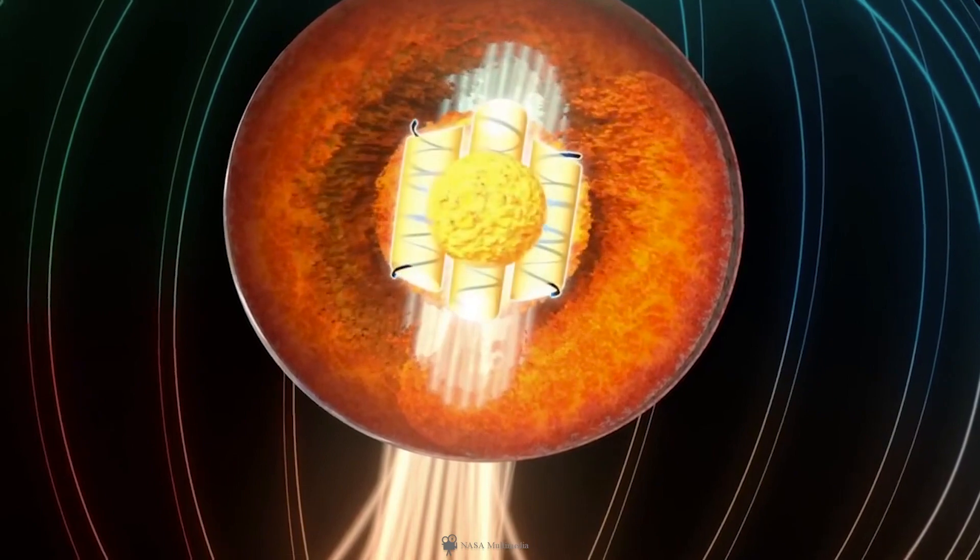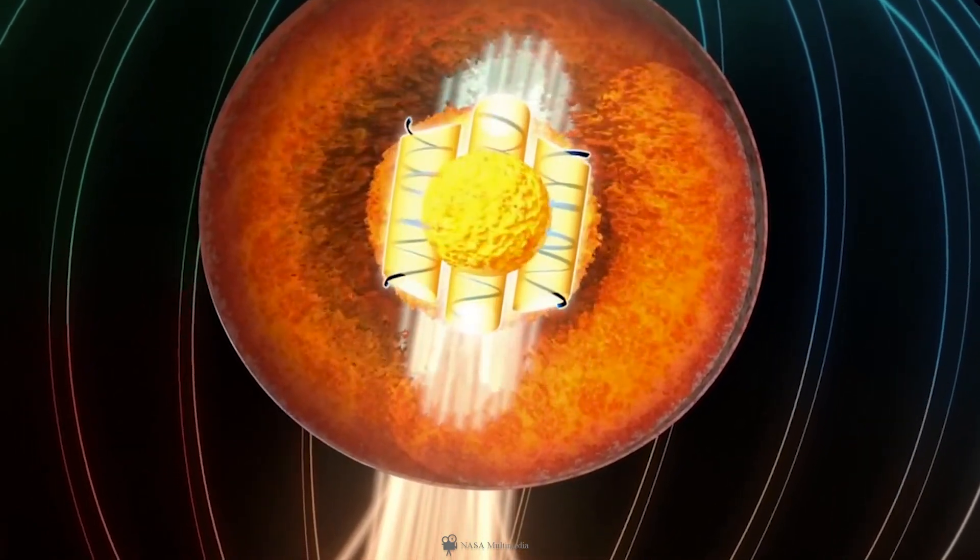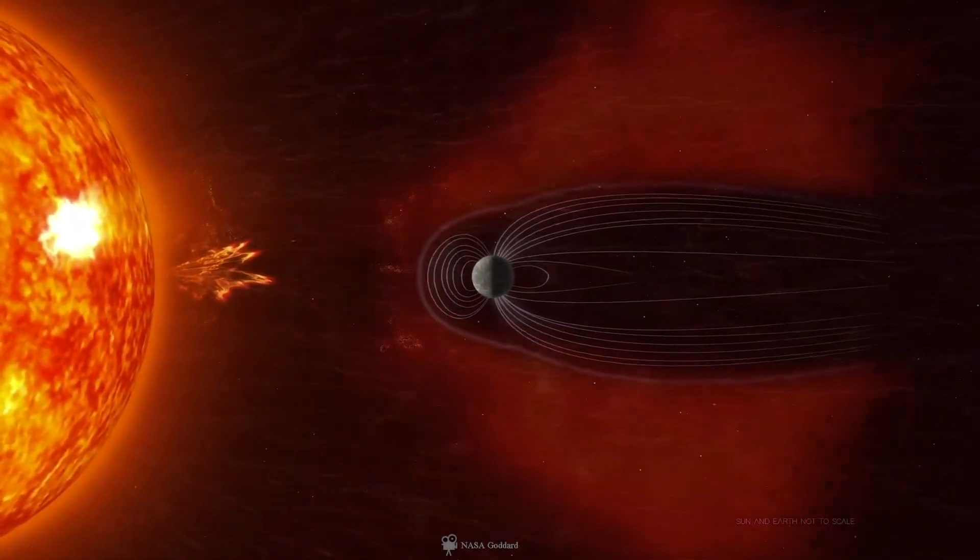These churning metals act as a massive generator called the geodynamo, creating electric currents that produce the magnetic field.